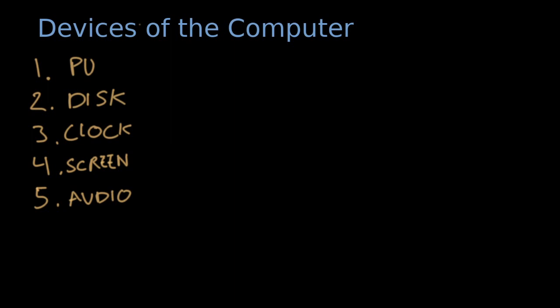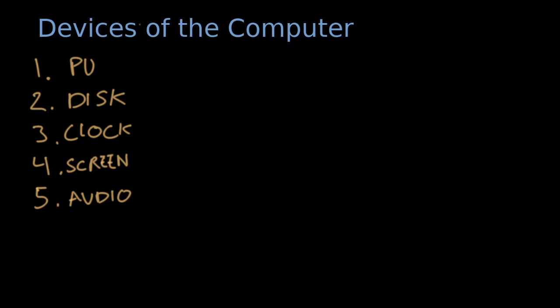If you would like to learn more about what instructions are exposed by each of these devices, then check out separate videos for each of the device types. If you would like to see how these devices can be combined to produce different architectural building blocks, then check out separate videos for the many fascinating architectural building blocks we can construct from these. If you would like to learn more, check out the book Foundations of Computer Science, available on Amazon.